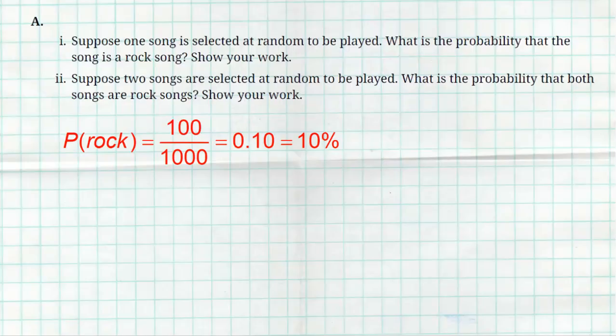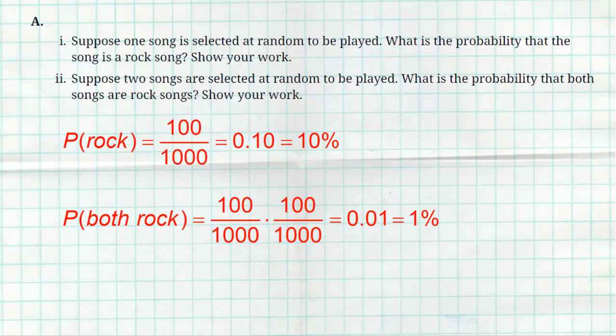The second question says, suppose two songs are selected at random, what is the probability that they're both rock songs? If they didn't replay songs, it would be 100 out of 1,000 times 99 out of 999. But it's said that any song could be replayed at any time, so it's simply going to be 100 out of 1,000 times another 100 out of 1,000. 10% times 10%, which gives us 0.01 or 1%. So there's a 1% chance that two rock songs are played back to back.